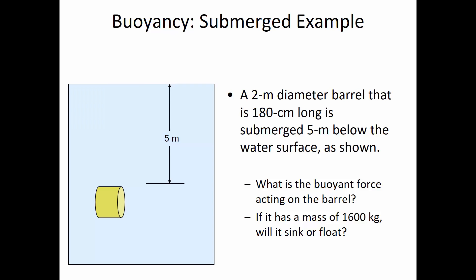We need to compare the buoyant force to the weight, so you'll have to convert that mass to weight. F sub B versus W: if F sub B is greater than W, then it floats. If F sub B is less than W, then it sinks.